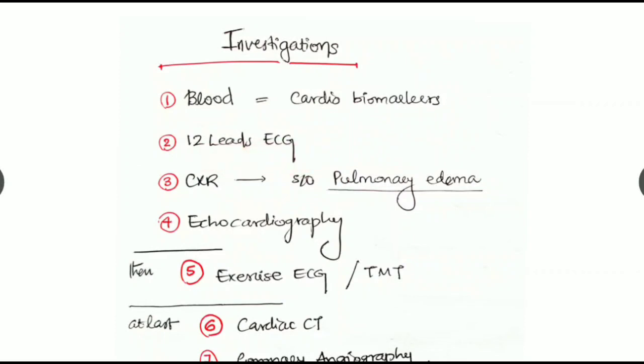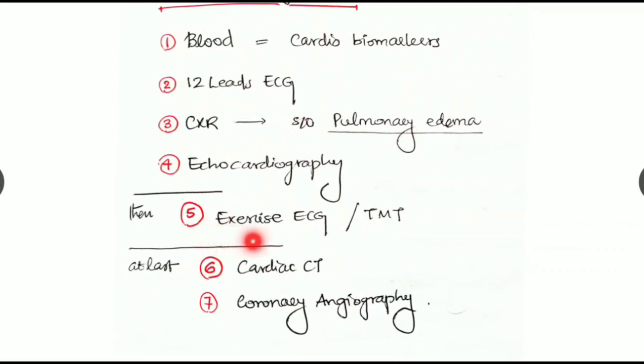Let's see the investigations. In the blood we have to check the cardiac biomarkers. Go for 12 lead ECG, take a chest x-ray if you are suspicious of any pulmonary edema, and we have to take an echocardiography. Then we have to go for an exercise ECG or the treadmill test TMT test, and at last we can go for cardiac CT and later on coronary angiography.